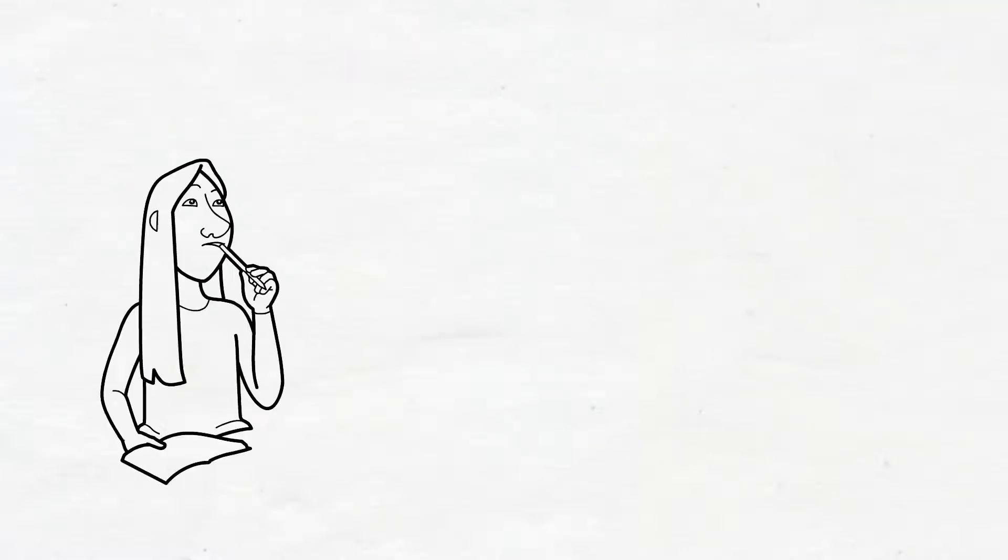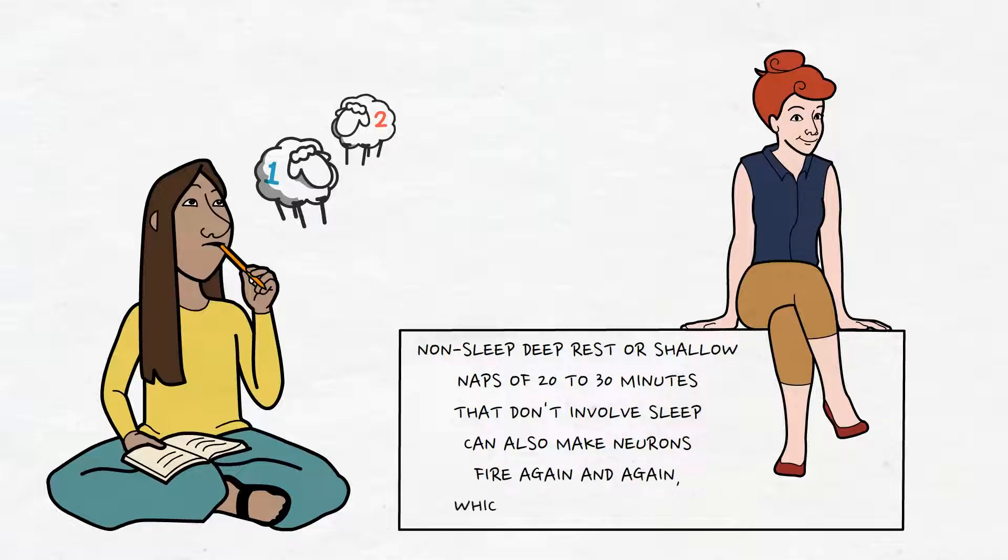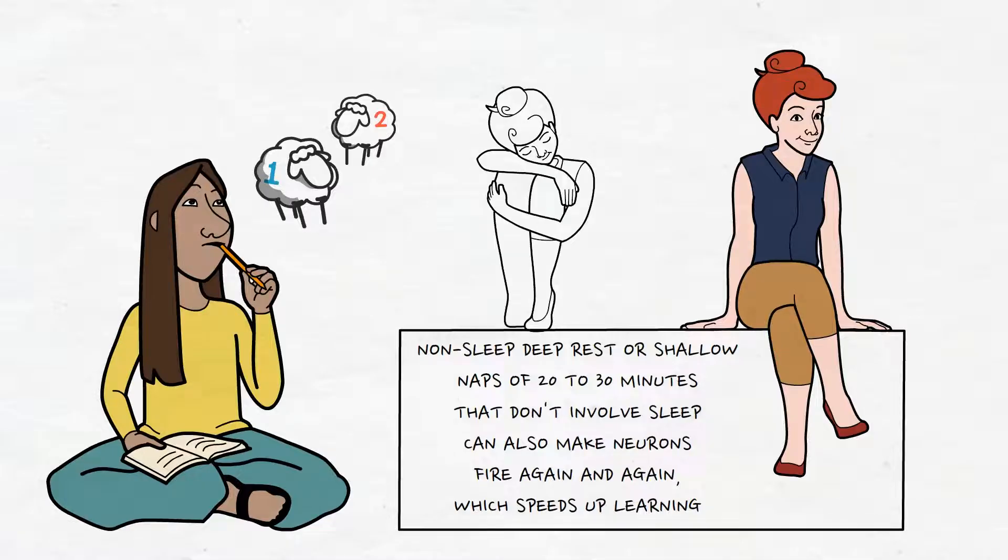But what happens if you can't nap? Don't be afraid. Non-sleep deep rest or shallow naps of 20 to 30 minutes that don't involve sleep can also make neurons fire again and again, which speeds up learning. So, even if you can't take a nap, you can still help your learning by taking a break, closing your eyes, and letting your mind rest.